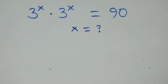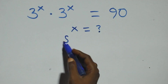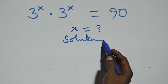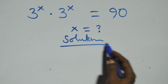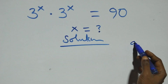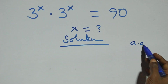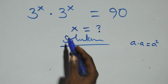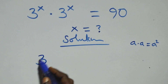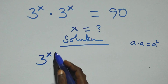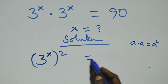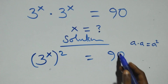Hello, welcome. Here we solve a nice exponential equation. When we have a times a, we can express it as a squared. Similarly, we can write 3 raised to power x, times 3 raised to power x, as 3 raised to power x, all squared, equals 90 on this side.